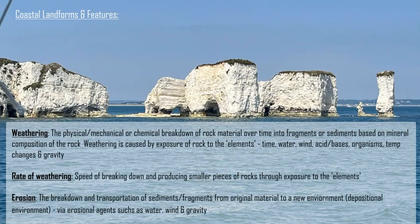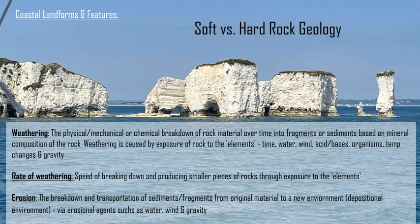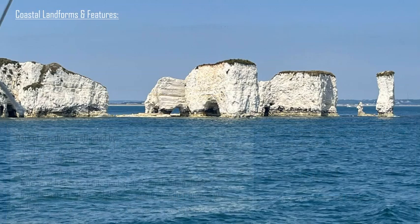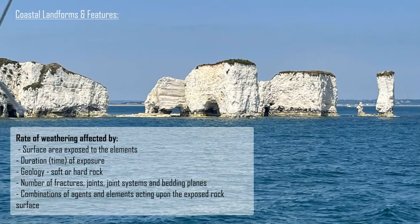Firstly, we have to discuss and consider the bedrock geology of the coastline. If it's a harder igneous or metamorphic rock, then the rate or speed of weathering and erosion will be reduced or decreased. However, if it's a sedimentary rock — particularly a softer one made of softer minerals — then the rate and speed will increase. This will also increase based on the amount of joints, joint systems, bedding planes, and surface area exposed to the weathering and erosional agents.